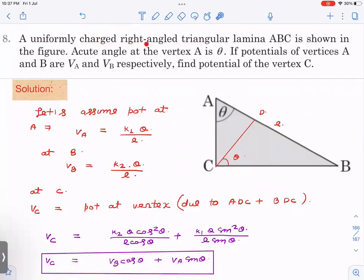There is a uniformly charged right angle triangular lamina ABC and acute angle of the vertex is theta. Potential at A and B are VA and VB. So here and here potential is given. We have to find potential of the vertex at C. So this question you can do from integration also. You can try to solve this question by actually calculating VA, calculating VB from integration, but that is not needed here. I'm going to explain the solution from scaling method.